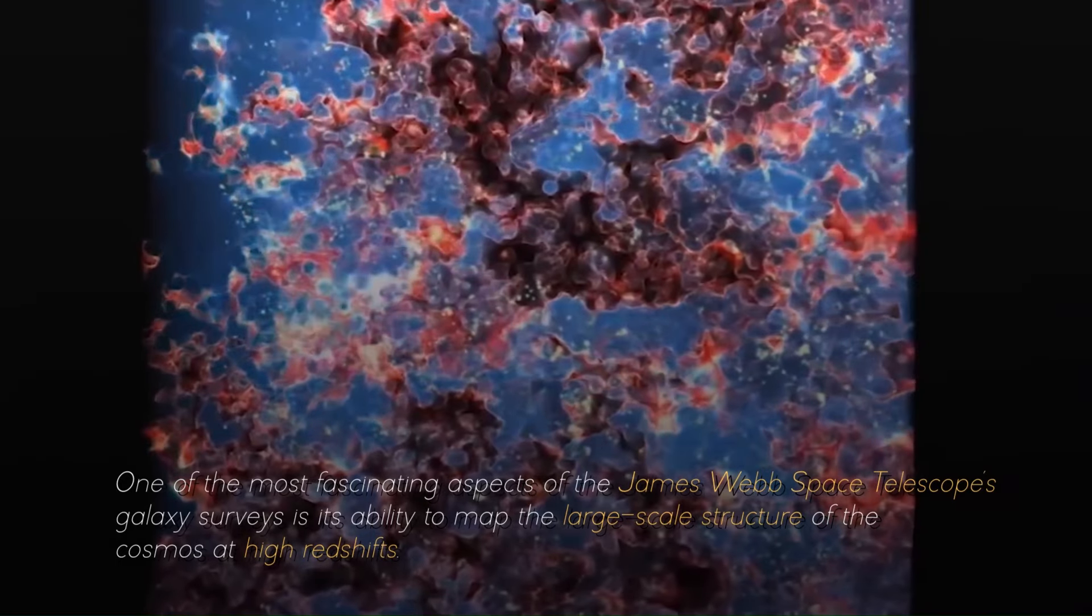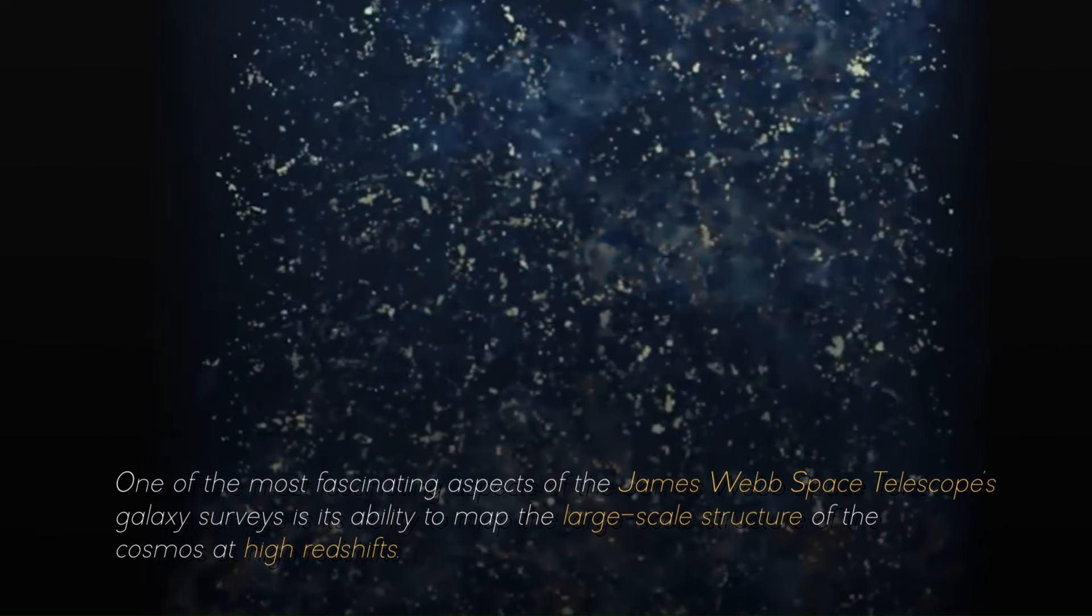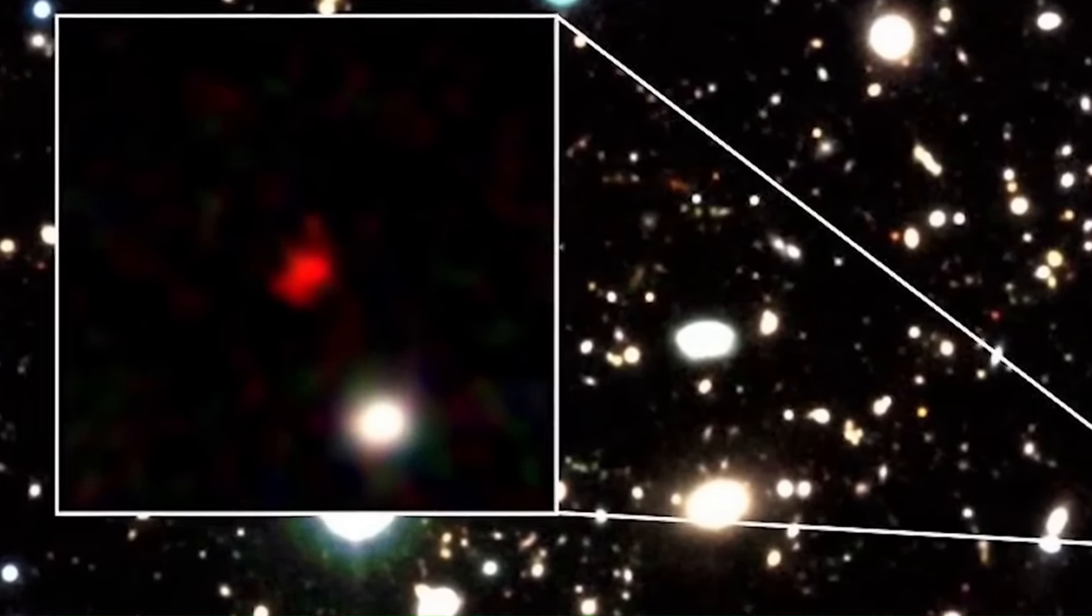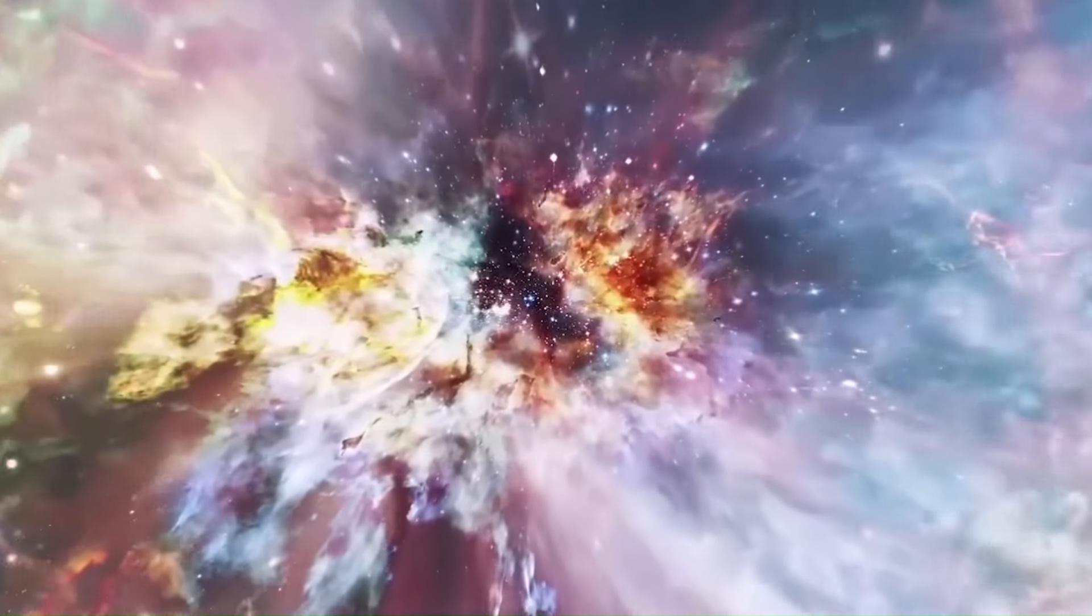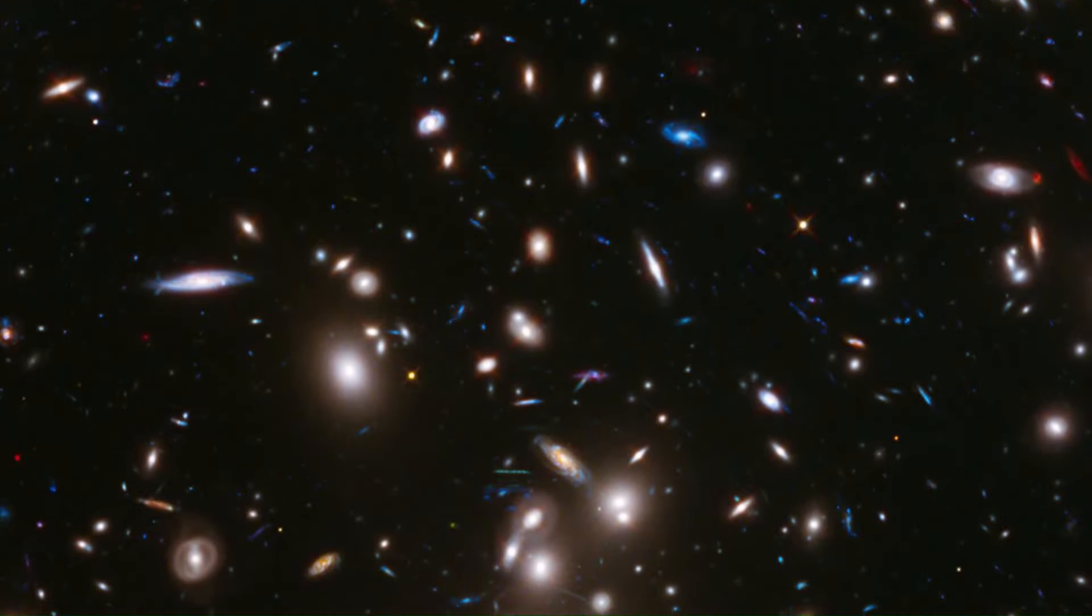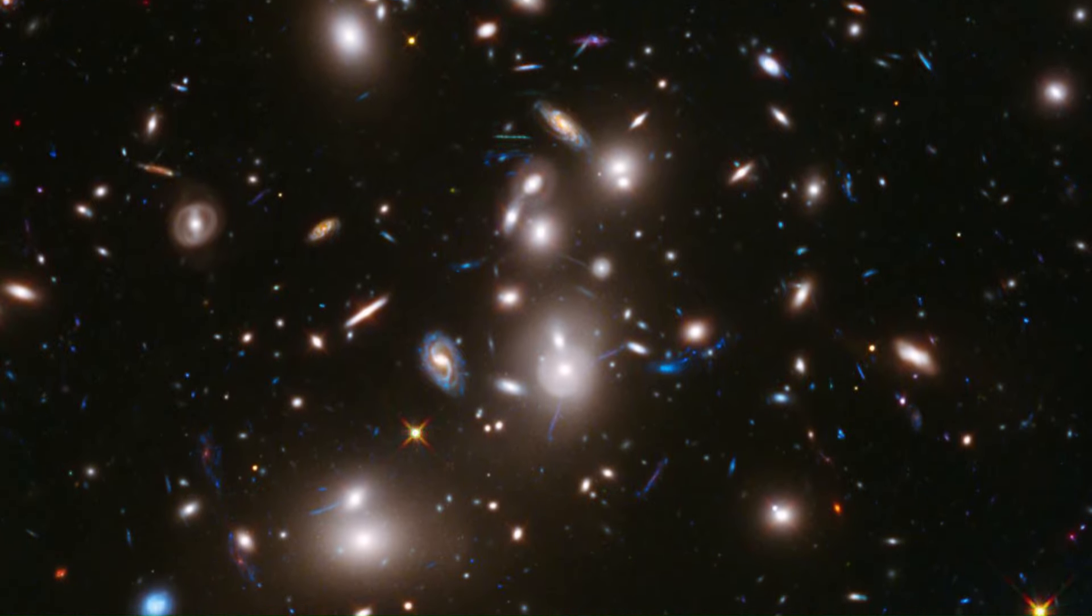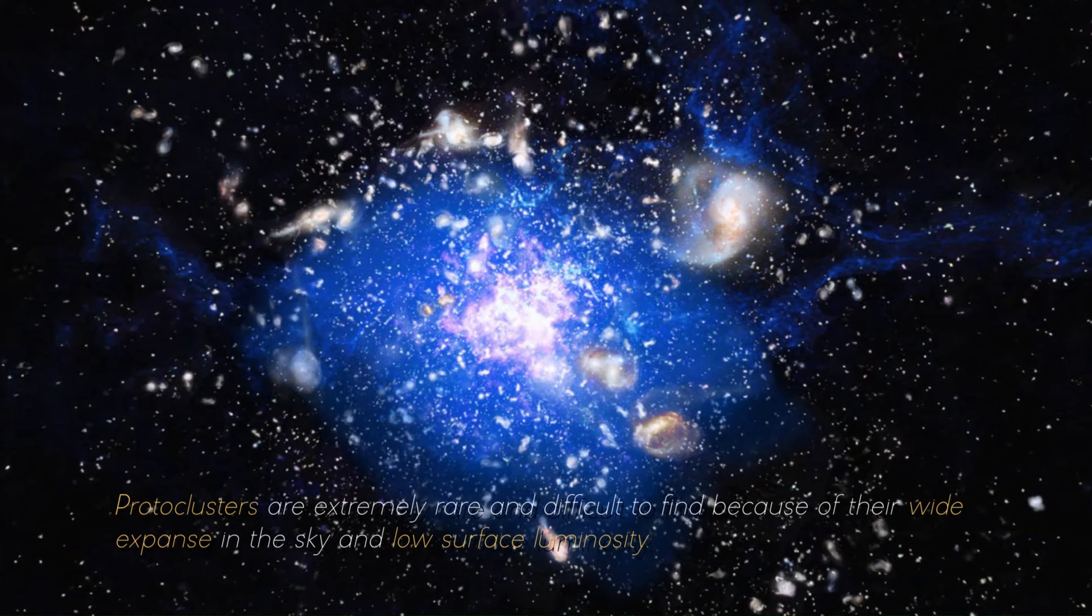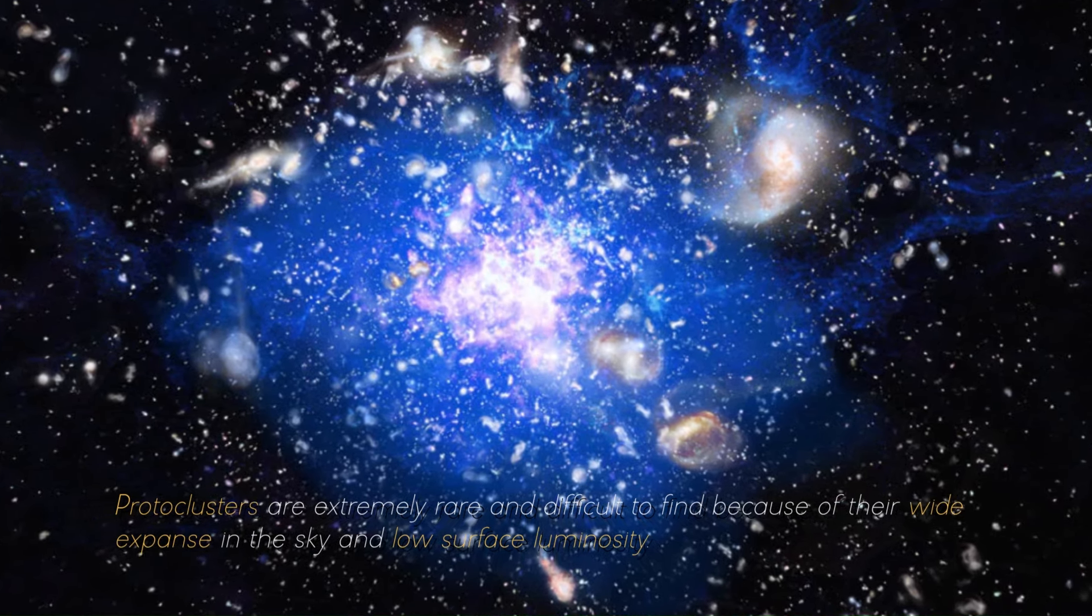One of the most fascinating aspects of the James Webb Space Telescope's galaxy surveys is its ability to map the large-scale structure of the cosmos at high redshifts, when galaxies were still young and grouped into large clusters known as protoclusters. These protoclusters are the predecessors of today's galaxy clusters, which are the largest gravitational structures in the universe. By studying these protoclusters, we can learn about the interactions between galaxies, their interactions with their surroundings, their growth and merger, and how they influence the formation of stars and planets.